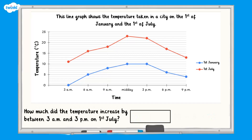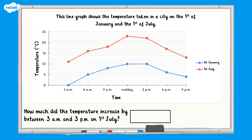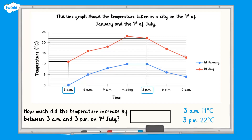How much did the temperature increase by between 3am and 3pm on the 1st of July? Remember, increase means go up. Pause here and answer the question. The temperature at 3am was 11 degrees and the temperature at 3pm was 22 degrees. Therefore, the temperature increased by 11 degrees.